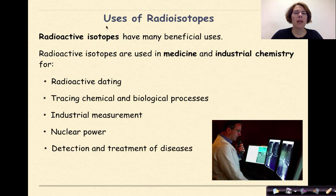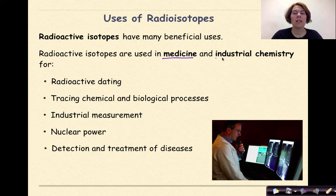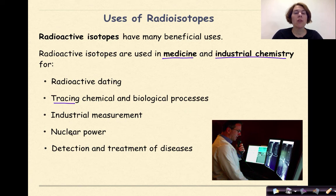Let's start off by talking about the uses of radioisotopes. Radioactive isotopes have many beneficial uses. They are used in medicine and in industrial chemistry, for radioactive dating, tracing chemical and biological processes, industrial measurement, nuclear power, and detection and treatment of diseases.